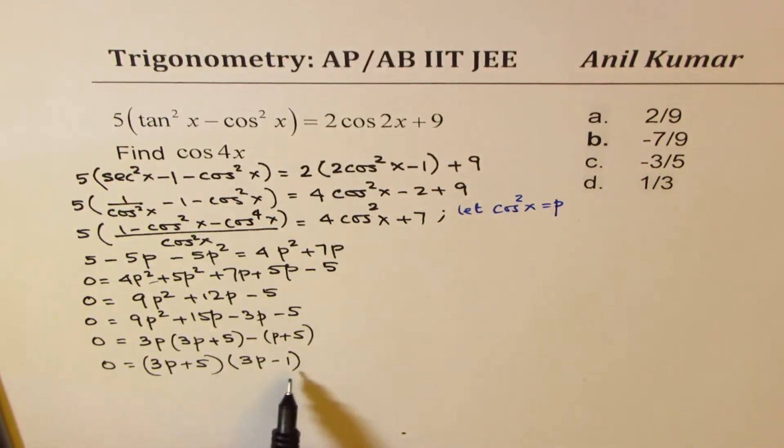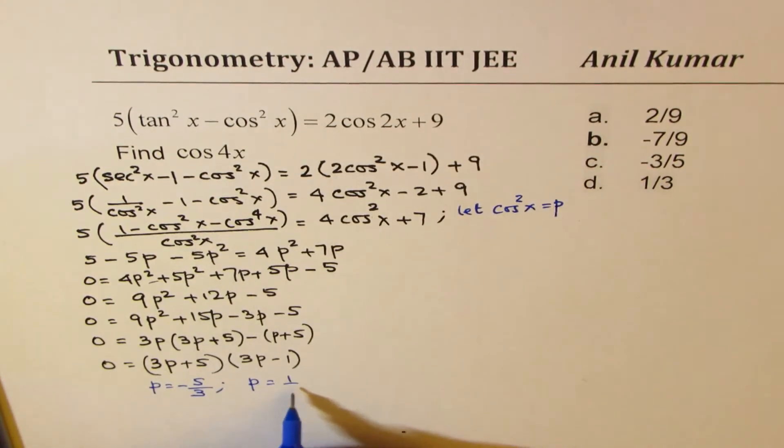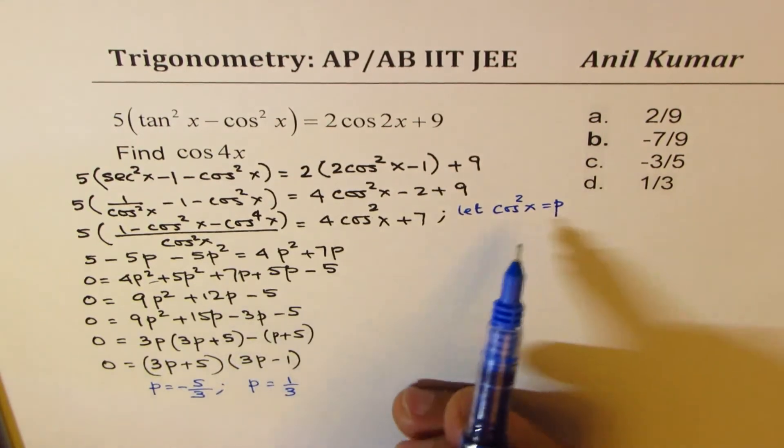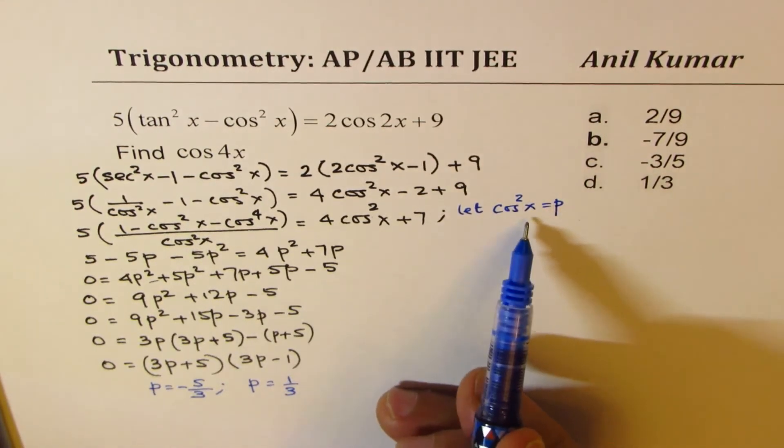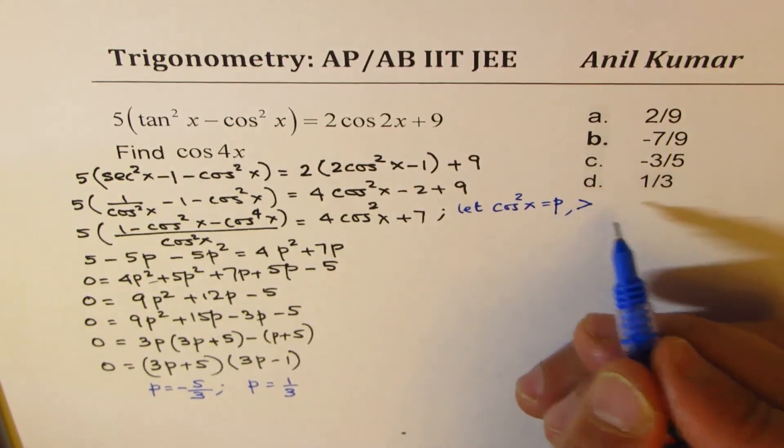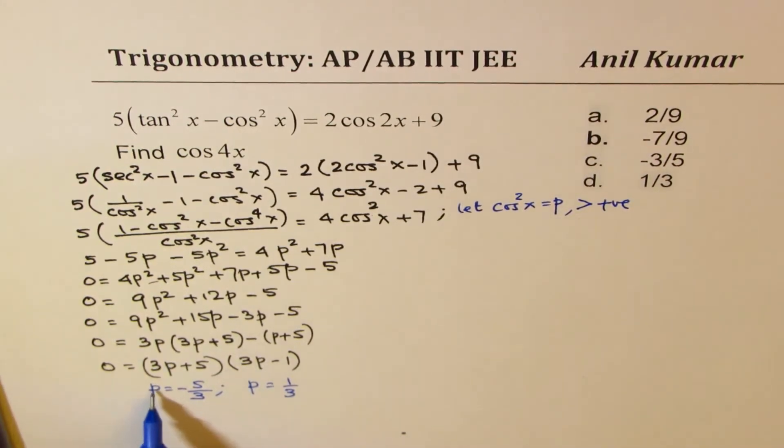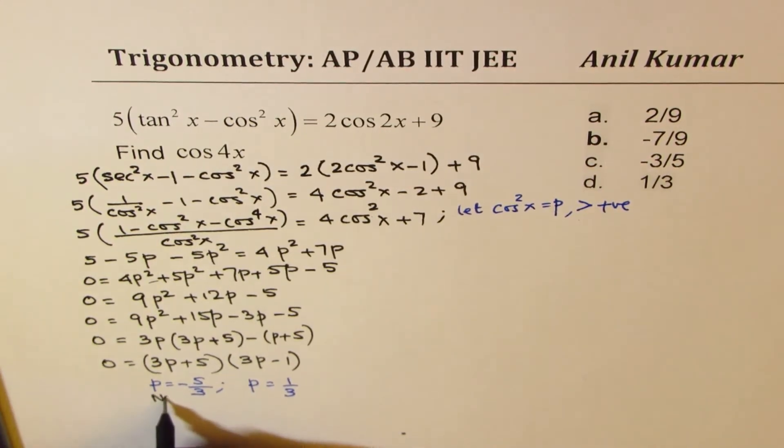Now, this quadratic equation gives us two solutions. One of them is p equals to minus 5 over 3. The other one is p equals to 1 over 3. Now, what is p? p is square of cosine, so p is always positive. It's non-negative, greater than or equal to 0, and less than or equal to 1. And therefore, p equals to minus 5 over 3 is not valid.